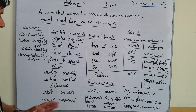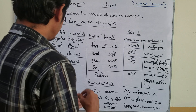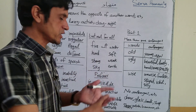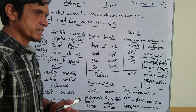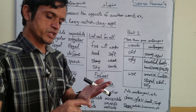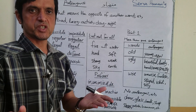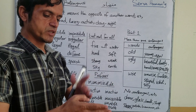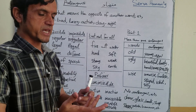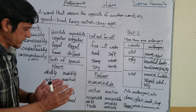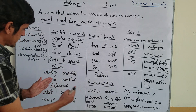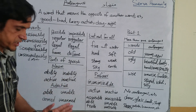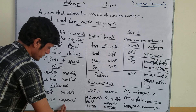The fourth point is: antonyms are found across all parts of speech. We can form them from nouns, adjectives, adverbs, and pronouns. But among the parts of speech, we cannot form antonyms for prepositions, conjunctions, or interjections. So these three parts of speech do not have antonyms, whereas noun, pronoun, adjective, verb, and adverb — for all five we can form antonyms. For example, 'ability' is a noun, so we can form 'inability' as its antonym. 'Able' is an adjective, so we can form 'unable.' 'Armed' — we can form 'unarmed.'